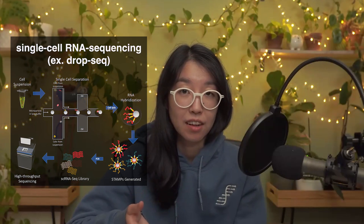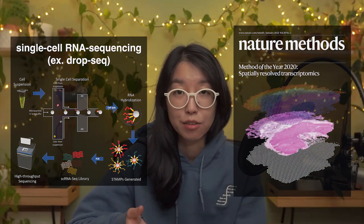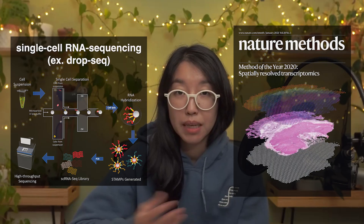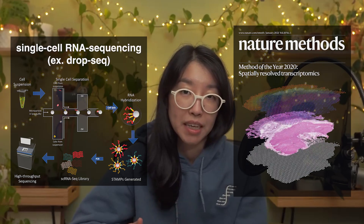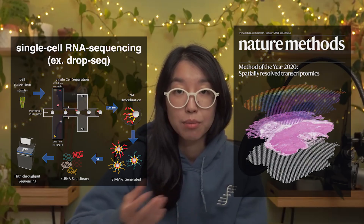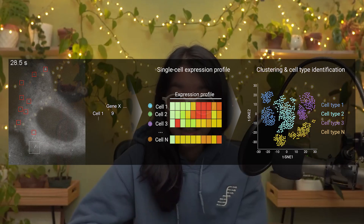Current high-throughput single-cell transcriptomic profiling technologies like single-cell RNA sequencing and spatially resolved transcriptomics like MERFISH and others measure the gene expression levels in individual single cells, but in a destructive manner, meaning that the cells are destroyed in the measurement process. The single-cell resolution gene expression measurements we obtain therefore represent a static snapshot in time, and we're unable to follow these cells as they differentiate and undergo other dynamic processes and see how their genes change over time. However, we may still be able to infer some degree of gene expression dynamics from this static snapshot.